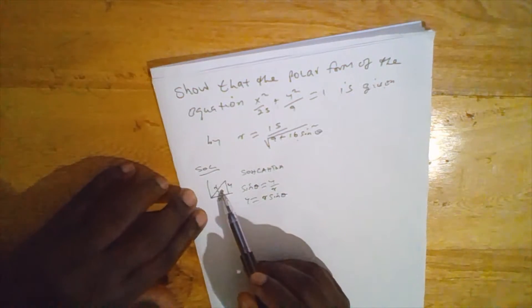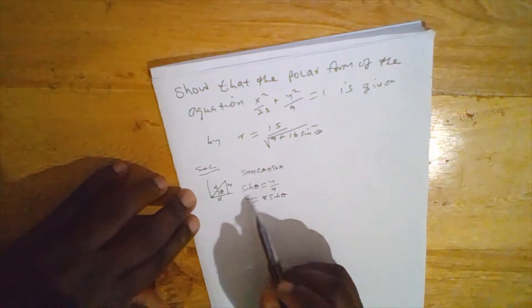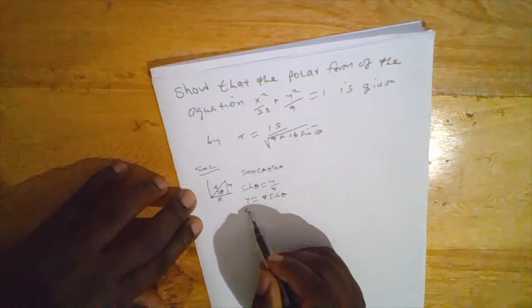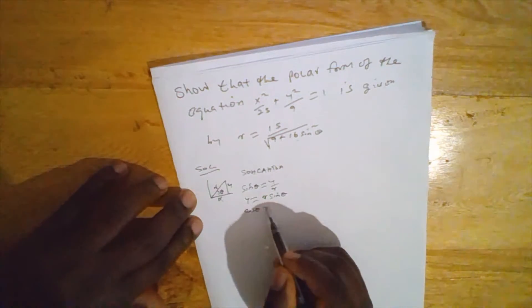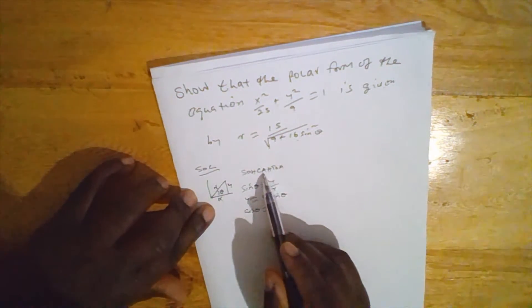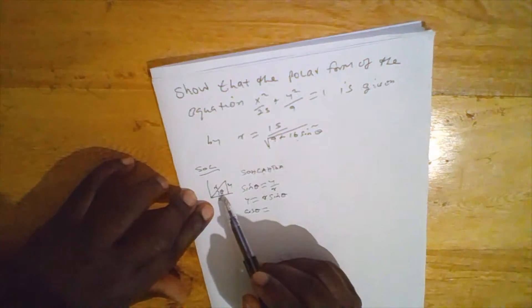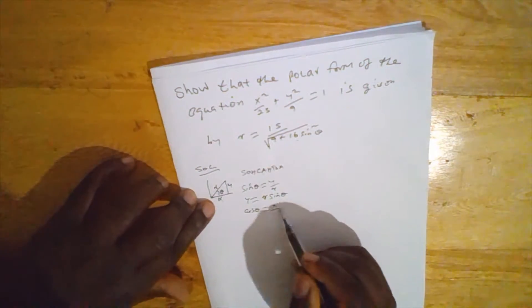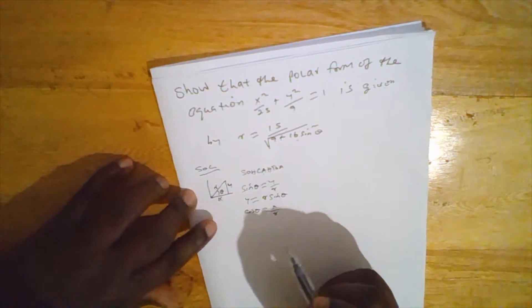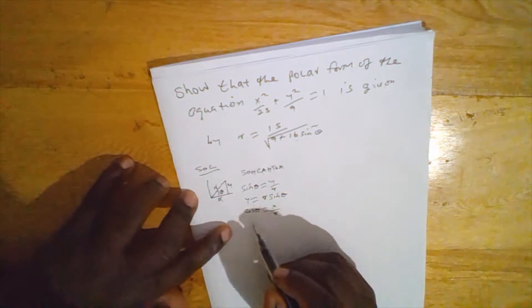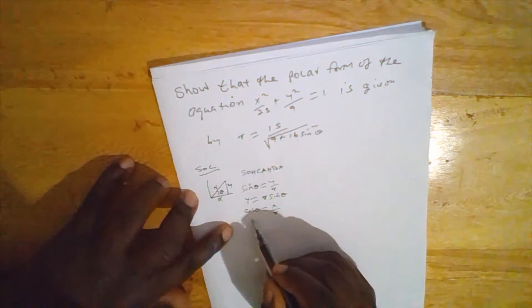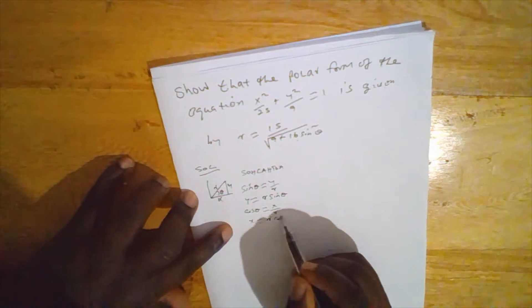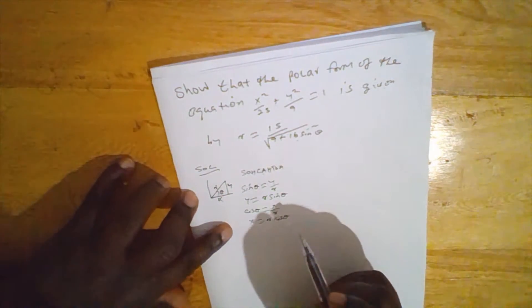The cosine of this angle is given by adjacent over hypotenuse. The adjacent side is x and the hypotenuse is r. Therefore x equals r cos theta.